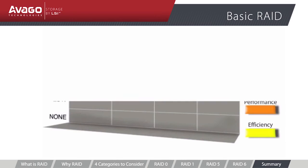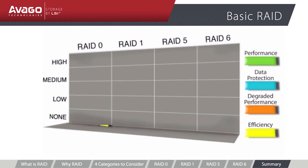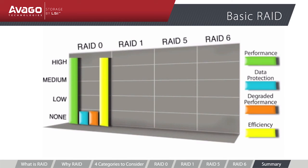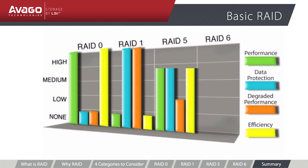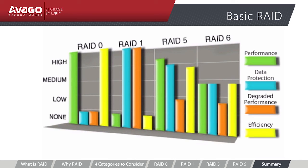To summarize the RAID levels: RAID 0 offers the highest performance and efficiency levels but no data protection. RAID 1 offers high data protection and degraded performance, but performance and efficiency are at the lowest of all RAID levels. RAID 5 offers very good performance, good data protection and efficiency, but degraded performance is low. RAID 6 offers good performance and efficiency while providing the highest level of data protection.